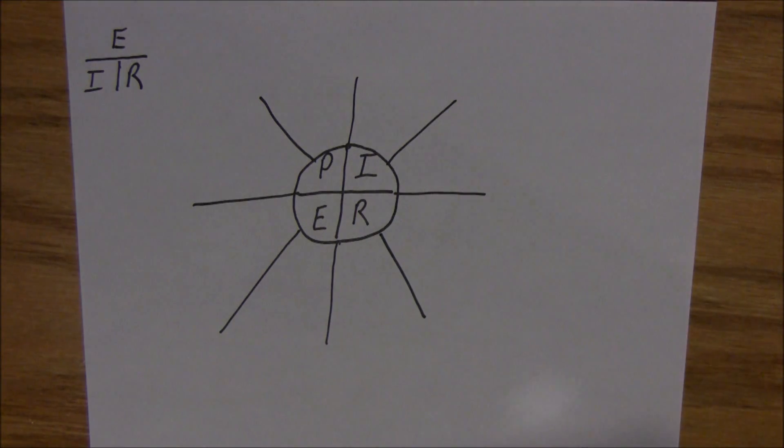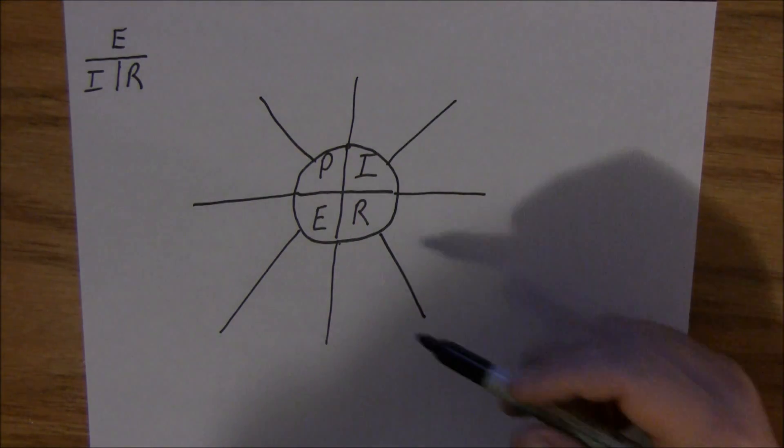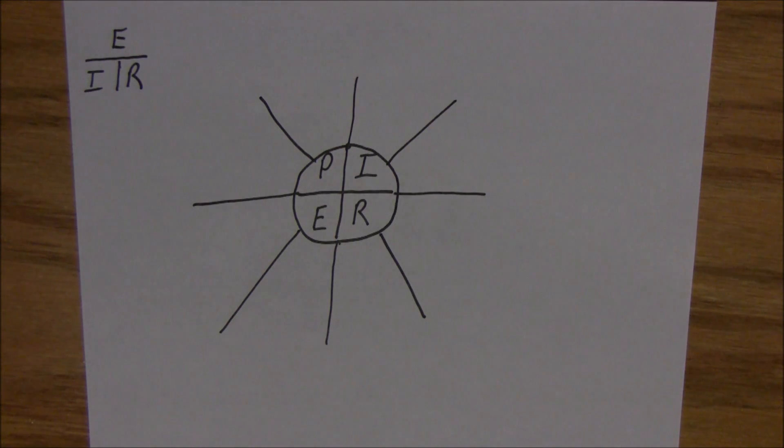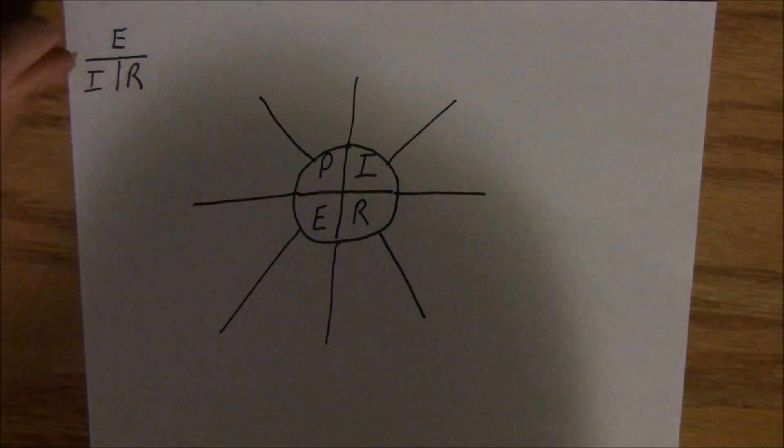Now, P, you've got power, which is measured in watts. I, current, measured in amps. R, resistance, measured in ohms. And E, electromotive force, measured in voltage, volts.